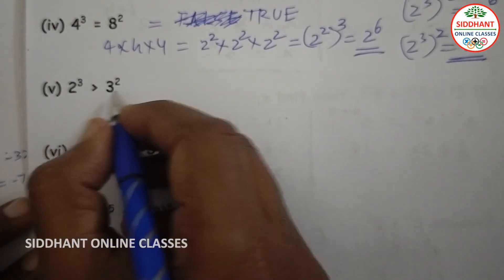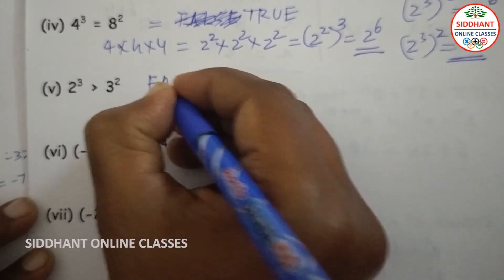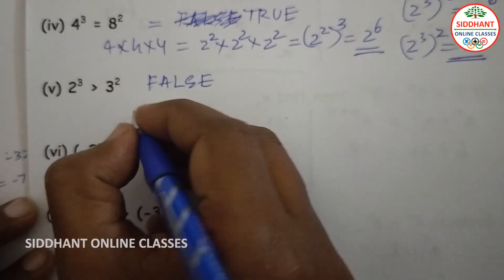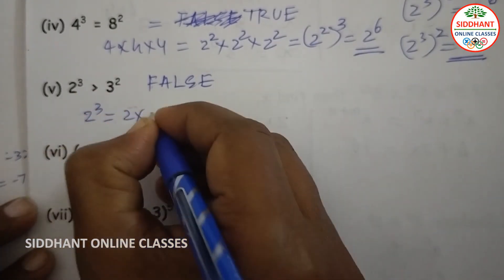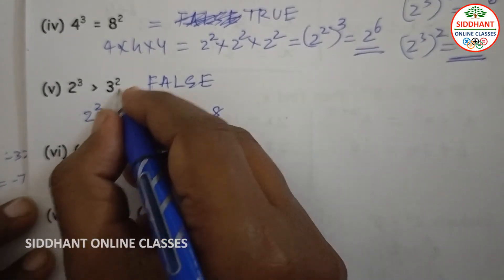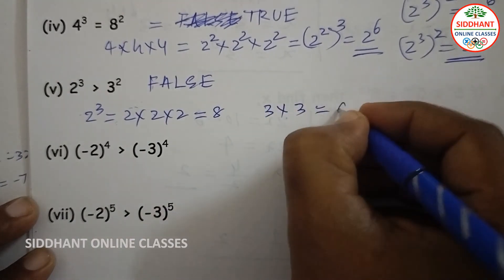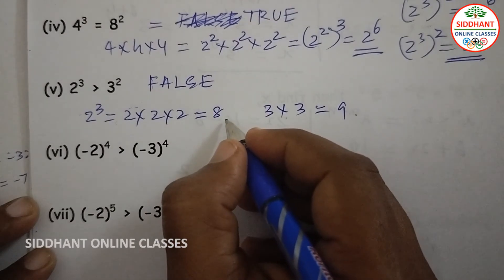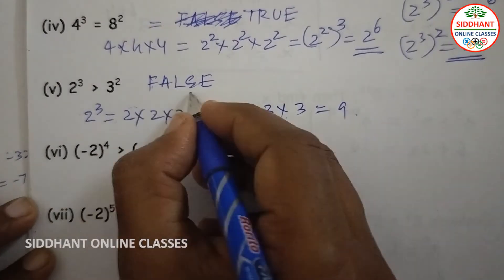Fifth statement: 2 cube is greater than 3 to the power of 2. The statement is false. 2 cubed equals 2 into 2 into 2, which is 8. 3 squared equals 3 into 3, which is 9. Since 8 is less than 9, the statement is false.